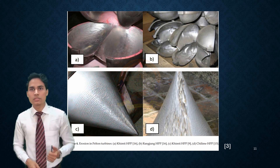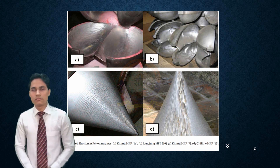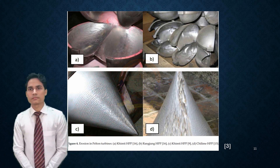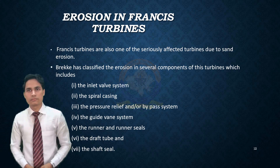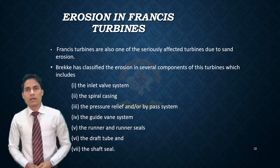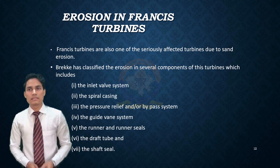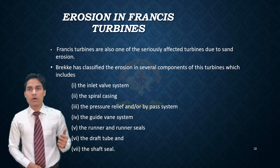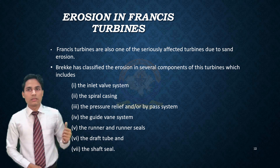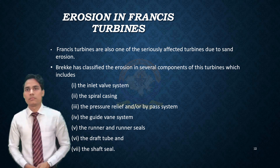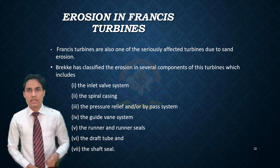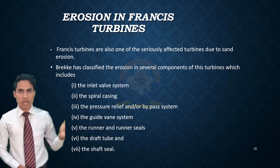The image shows the erosion in the affected turbine. Erosion in Francis turbine. Francis turbines are also one of the seriously affected turbines due to sand erosion. The erosion in various components of the Francis turbine is classified into several areas, which include: first, the inlet valve system; second, the spiral casing; third, the pressure relief and bypass system; fourth, the guidevane system; fifth, the runner and runner seats; sixth, the draft tube; and last, the shaft seal.